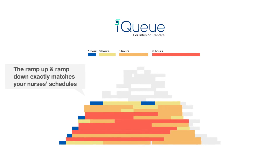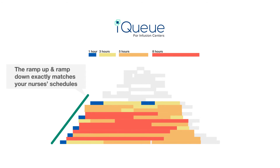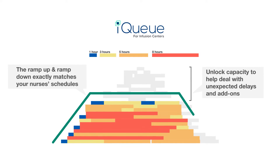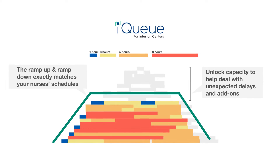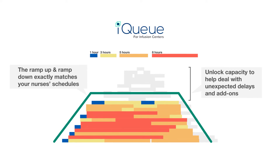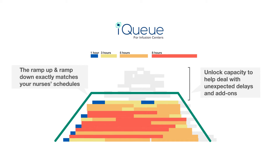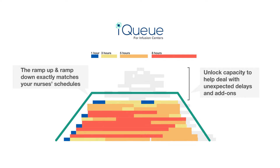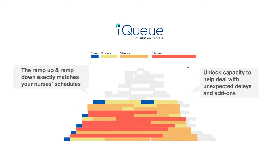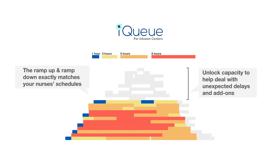The result? Utilization ramps up smoothly, stays flat for most of the day, and ramps down smoothly at the end of the day. It keeps the staff productively deployed while minimizing overtime or big swings in the workload from hour to hour. Finally, your nurses get a chance to take their lunch break.